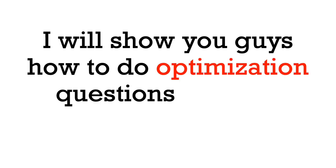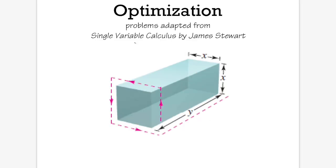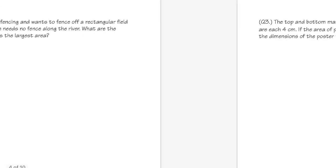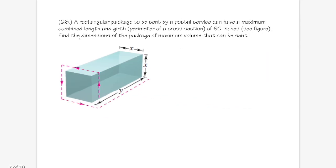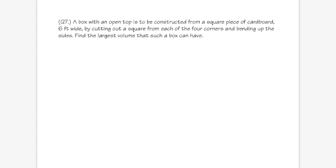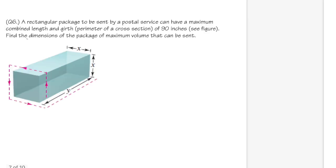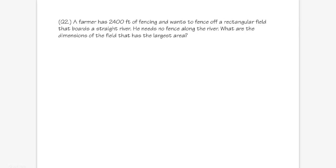Today I will show you how to do optimization questions for your Calculus 1 class. These questions are from the Single Variable Calculus textbook by James Stewart. We will go over eight questions. You can follow along with the file in the description, take notes, or try the questions first before watching. Calculus teachers are also welcome to use the video and worksheet with their students.